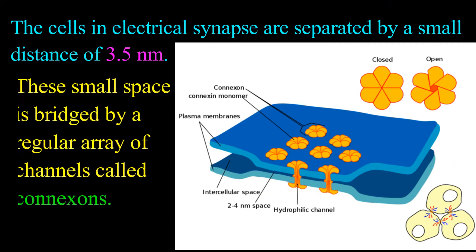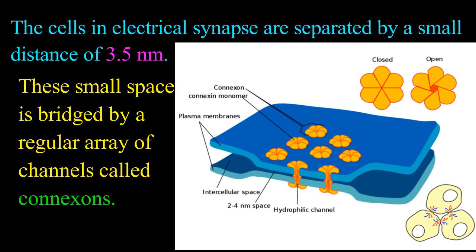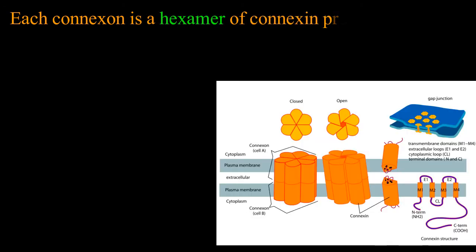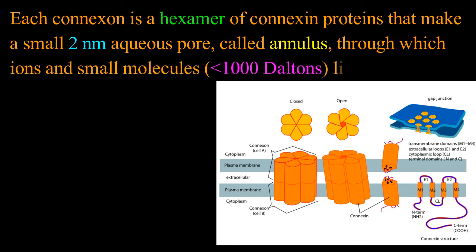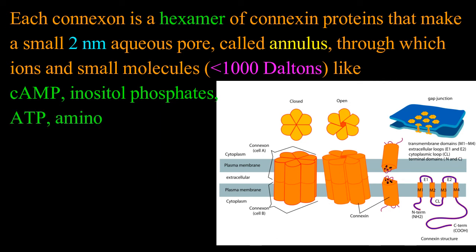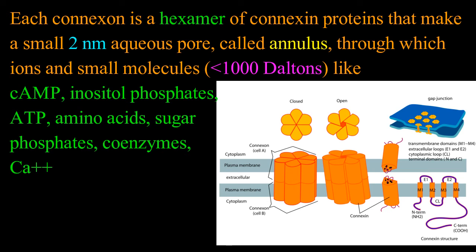This small space is bridged by a regular array of channels called connexons. Each connexon is a hexamer of connexin proteins that make a small 2 nanometer aqueous pore called annulus through which ions and small molecules smaller than 1000 daltons like cyclic AMP, inositol phosphates, ATP, amino acids, sugar phosphates, coenzymes, calcium ions, monomers, tracers and dyes pass.